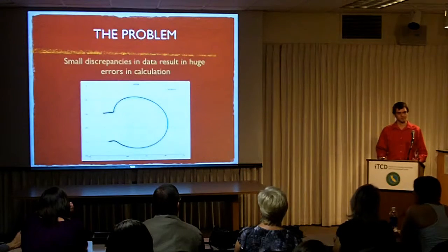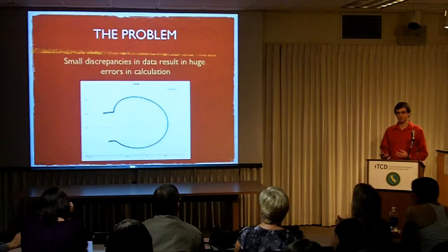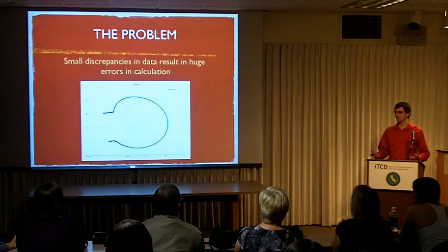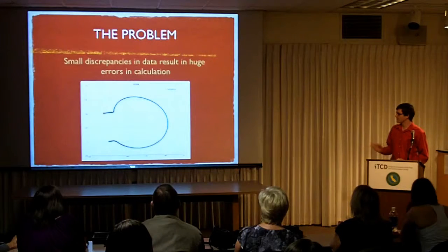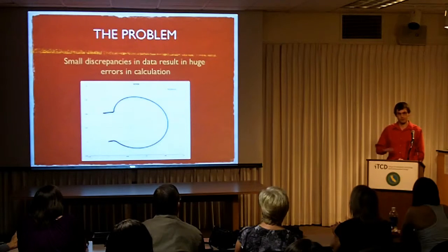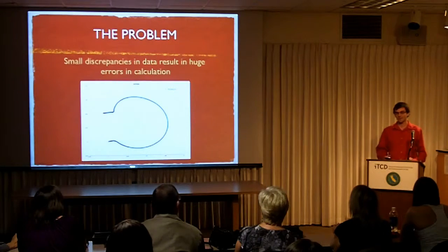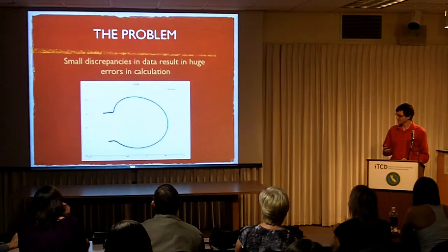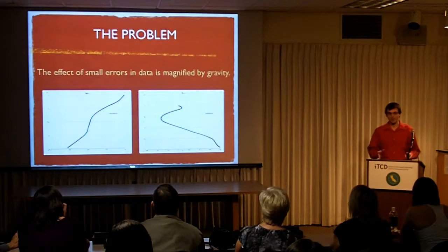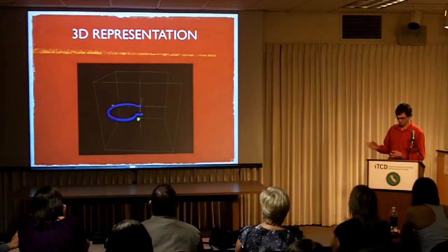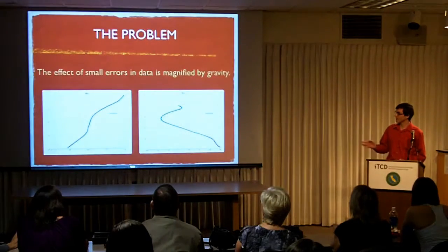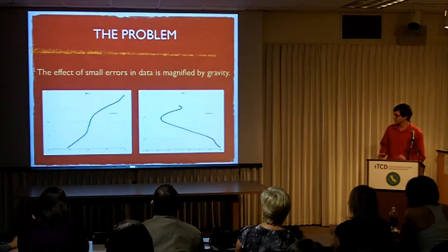One problem I ran into, though, was that small inaccuracies in the raw data would cause huge calculation errors. This graph right here shows the phone moving in a perfect circle on the table. As you can see, it didn't quite match up at the end of the rotation. Once you calculate gravity as well, there's an even larger error.